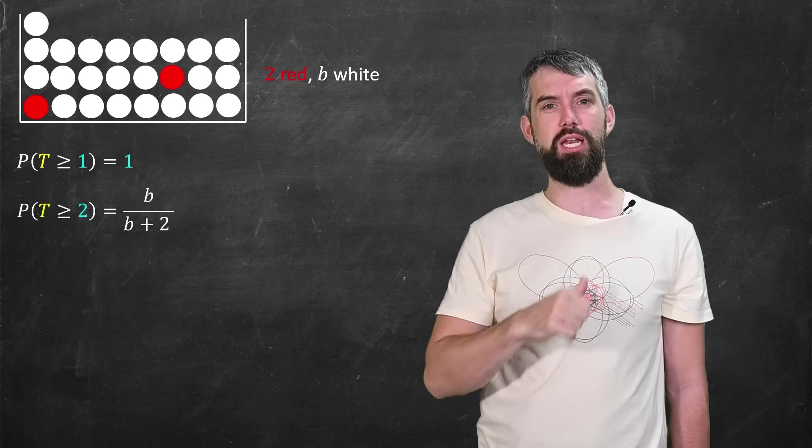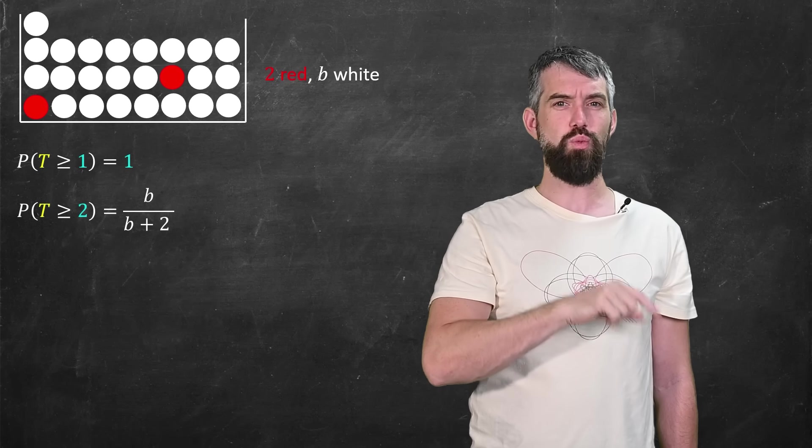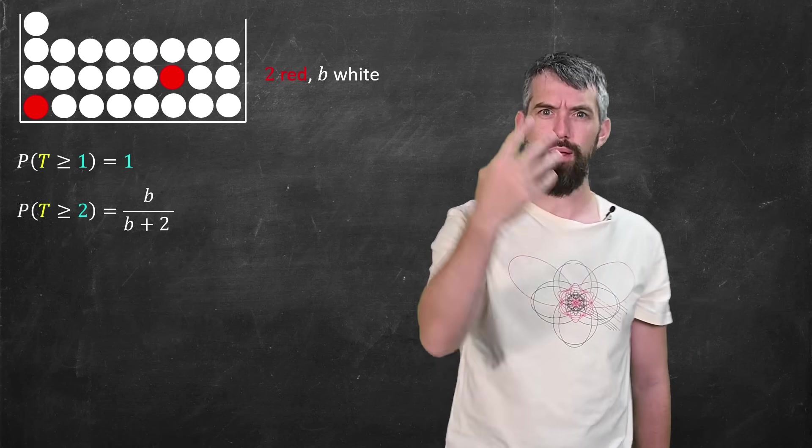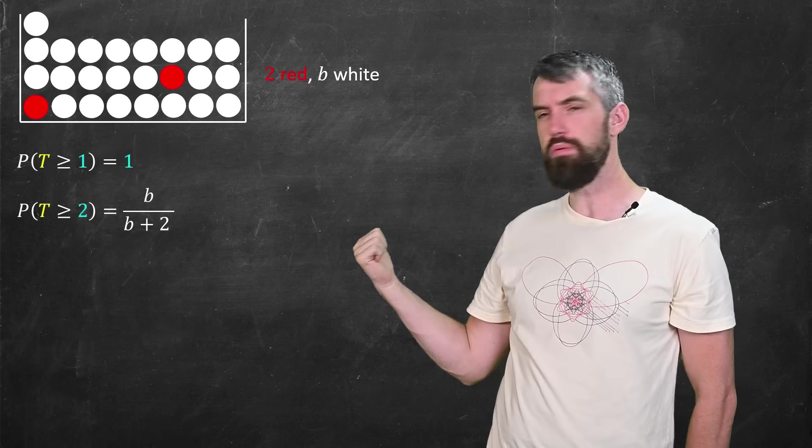The first time you reach in and select something, probably it's going to be white. All I have to figure out is, what was the chance of drawing a white? There was b whites, b plus two overall, so this ratio.